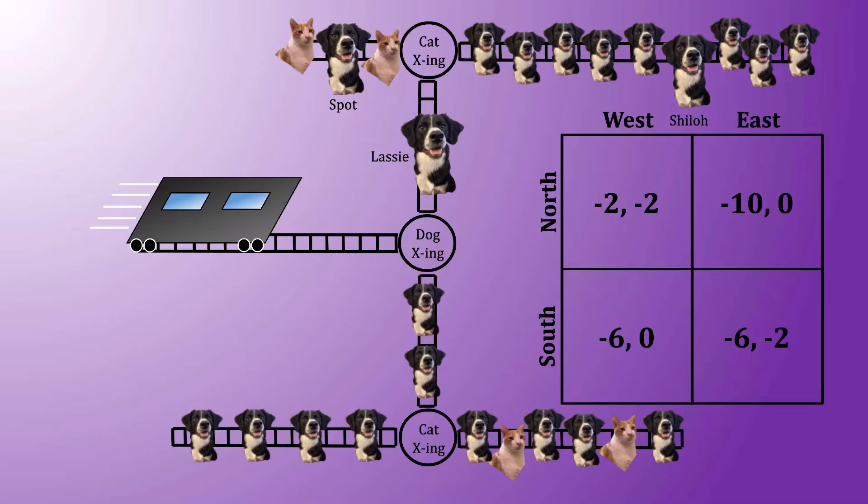Now think about how removing one of those three dogs would change, or perhaps more accurately, not change, what happens here. First, suppose we took away Lassie. Then the payoff matrix would adjust by having one fewer dog be struck for each of those north outcomes.